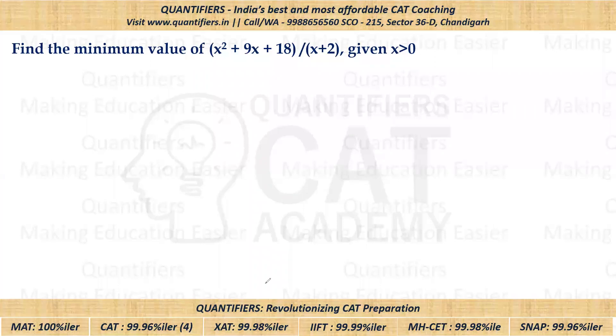So students, the question says we have to find the minimum value of this expression. It is also given that x is positive. Now I hope all of you are aware of basics of quadratic equation.